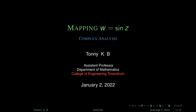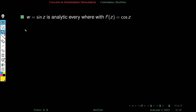Today we will discuss some properties of the mapping w equal to sin z. We know that the function sin z is differentiable everywhere and its derivative is cos z. That means this function is analytic everywhere.